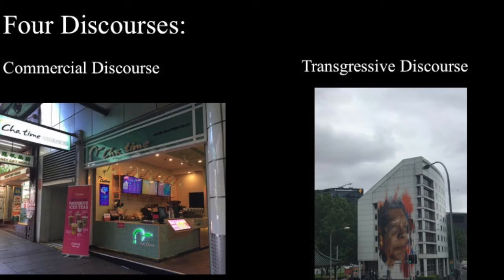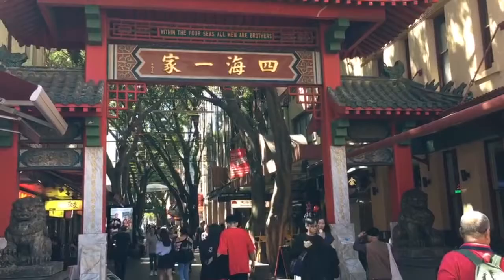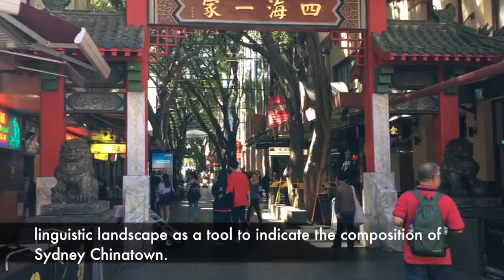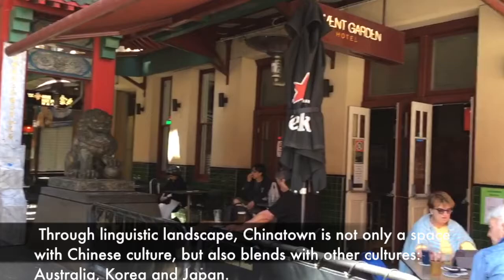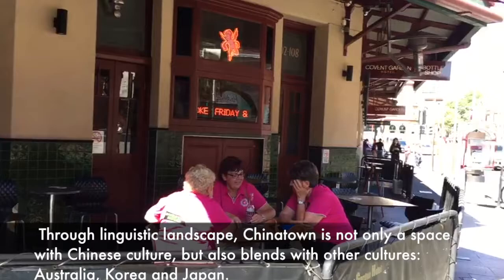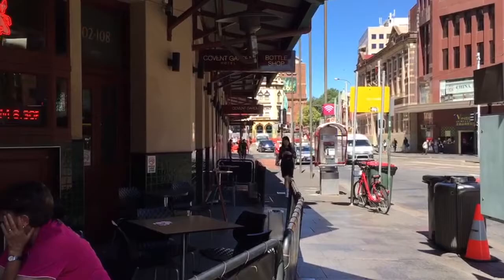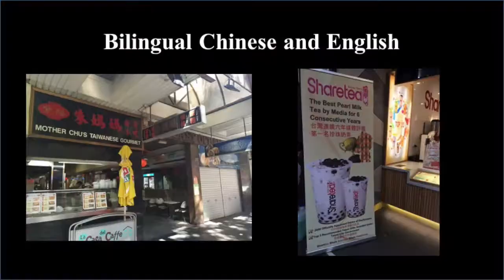This video will focus on commercial discourse in Sydney Chinatown. We will show linguistic landscape as a tool to indicate the composition of Sydney Chinatown. Through linguistic landscape, Chinatown is not only a space with Chinese culture but also blends with other cultures — Australia, Korea, and Japan.